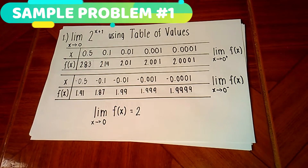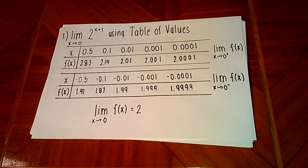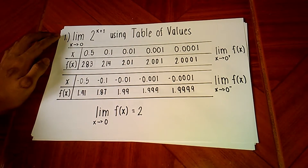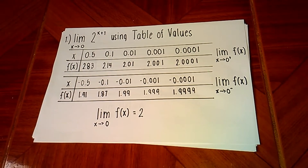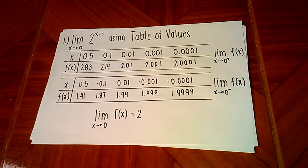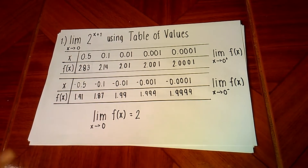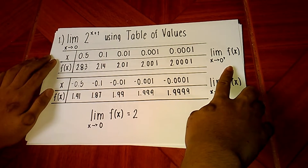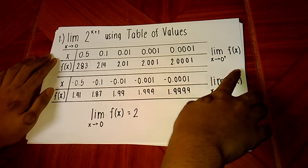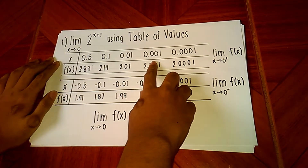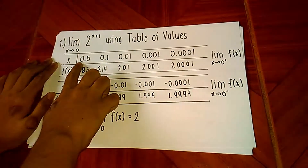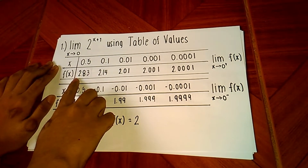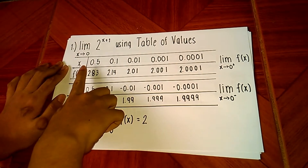Now let us give you examples on finding the limits of transcendental functions using the table of values. In this example, we will find the limit of 2 raised to the quantity of x plus 1 as x approaches 0. We need to find the right-hand and left-hand limit. To get the right-hand limit, we choose values greater than and near to 0 but not exactly 0: 0.5, 0.1, 0.01, 0.001, and 0.0001. As you can see, these values approach 0 but do not land at 0. We will observe which output value the function approaches.